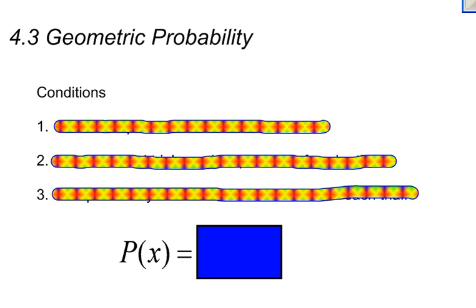In some of my previous videos, I was talking about binomial probability experiments, but now I want to focus on geometric probability experiments, and they're very similar. If you remember, with binomial experiments, there was a fixed number of trials, the probability of a success is always the same for each trial, and there's always a success or a failure — two outcomes. It's similar for geometric probabilities, just a little bit different.